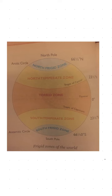Icebergs and snow fields characterize its landscape. The sky is lit up by aurora borealis in the northern hemisphere and aurora australis in the southern hemisphere. They are naturally occurring bright lights, usually observed at night in the polar regions, caused by the collision of charged particles from the Earth's atmosphere.